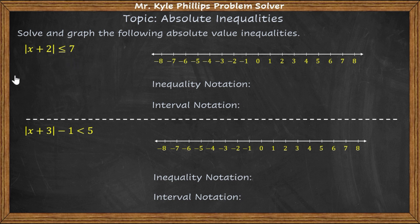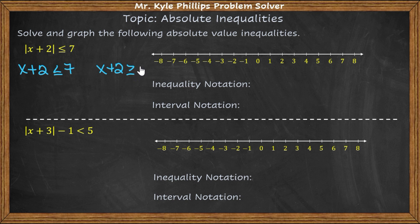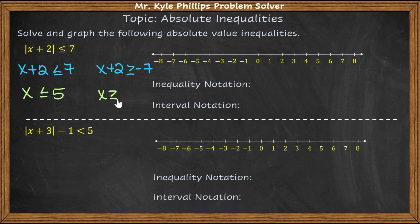So here I'm going to say that x plus 2 is less than or equal to 7, and x plus 2 is greater than or equal to negative 7. Subtracting 2 from both sides, I get x is less than or equal to 5, and x is greater than or equal to negative 9.